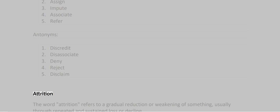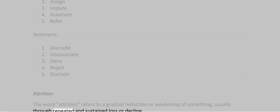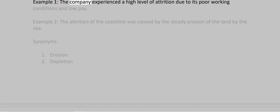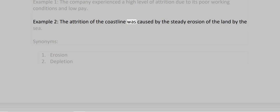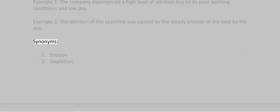Attrition. The word attrition refers to a gradual reduction or weakening of something, usually through repeated and sustained loss or decline. Example 1: The company experienced a high level of attrition due to its poor working conditions and low pay. Example 2: The attrition of the coastline was caused by the steady erosion of the land by the sea.